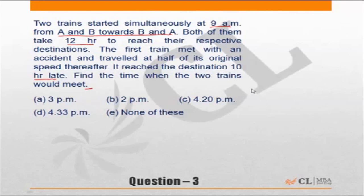So as per the question, the trains from A and B both started at 9 a.m. and both of them take at their normal speed 12 hours to cover the journey, or their initial speeds are the same.